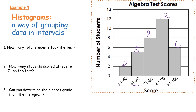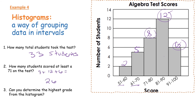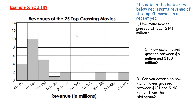How many total students took the test? Add all values: 2 plus 5 plus 8 plus 12 plus 6 equals 33 students. How many students scored at least a 71? That means they scored more than 71, so: 8 plus 12 plus 6 equals 26 students. Can you determine the highest grade from the histogram? No — we only have an interval, so we can't tell if someone scored exactly 100. Grades are just shown as between 91 and 100.